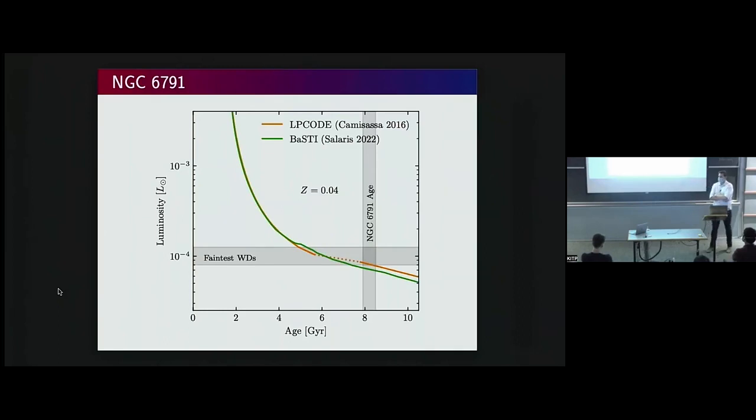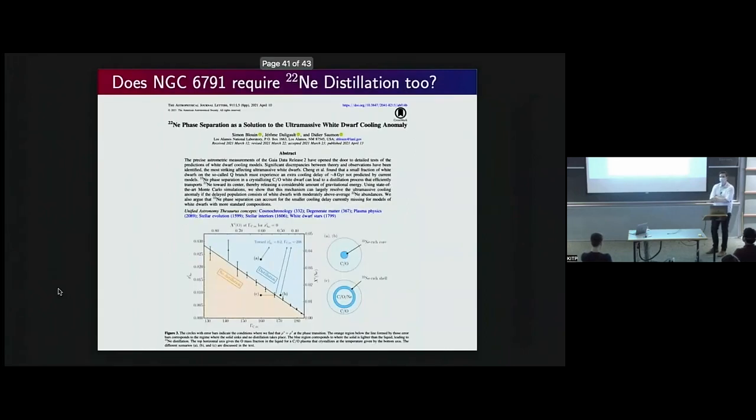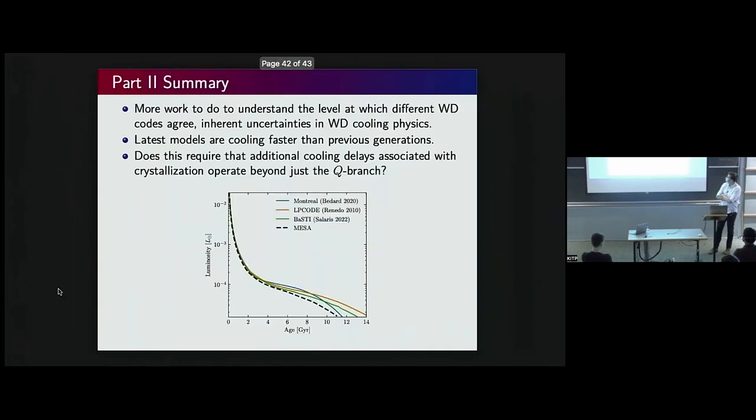If I throw in the BASTI models that roughly include the same input physics, they cool a little bit faster and now they're missing that box. And if I throw on my MESA models, again I'm trying to include the same input physics, they cool faster still and now we're really clearly missing that target. And so just with standard neon-22 sedimentation, I kind of wonder if we can reproduce NGC 6791. So my suggestion is maybe the distillation idea that Simone Bluen has suggested is also required by NGC 6791, and I'd like to study that more and implement that in stellar evolution codes like MESA. So I'll leave up some conclusions, but I'm out of time, so I'll stop there. Thanks.